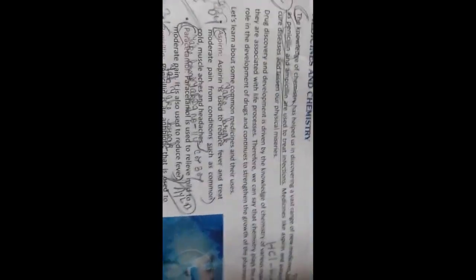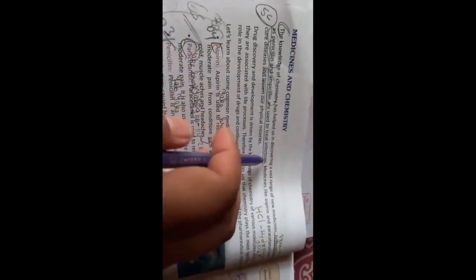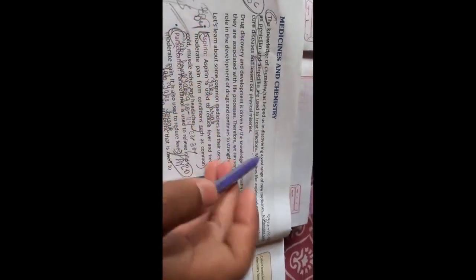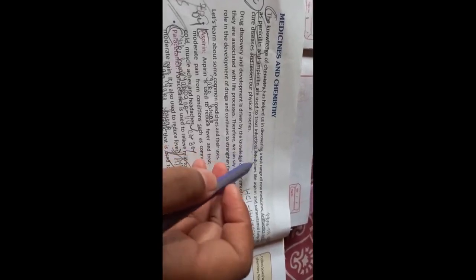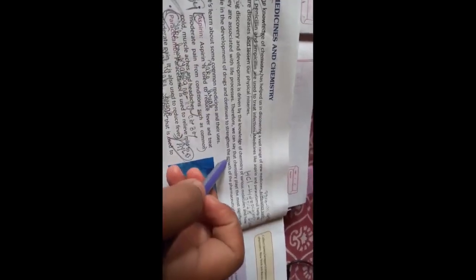The next one: Write the role of chemistry in medicine. You will write: The knowledge of chemistry has helped in discovering a vast range of new medicines. Antibiotics such as penicillin and ampicillin are used to treat infections. Then drug discovery and development is driven by the knowledge of chemistry of various molecules and how they are associated with life process. Therefore, we can say that chemistry plays the most significant role in the development of drugs and continues to strengthen the growth of pharmaceutical industries.